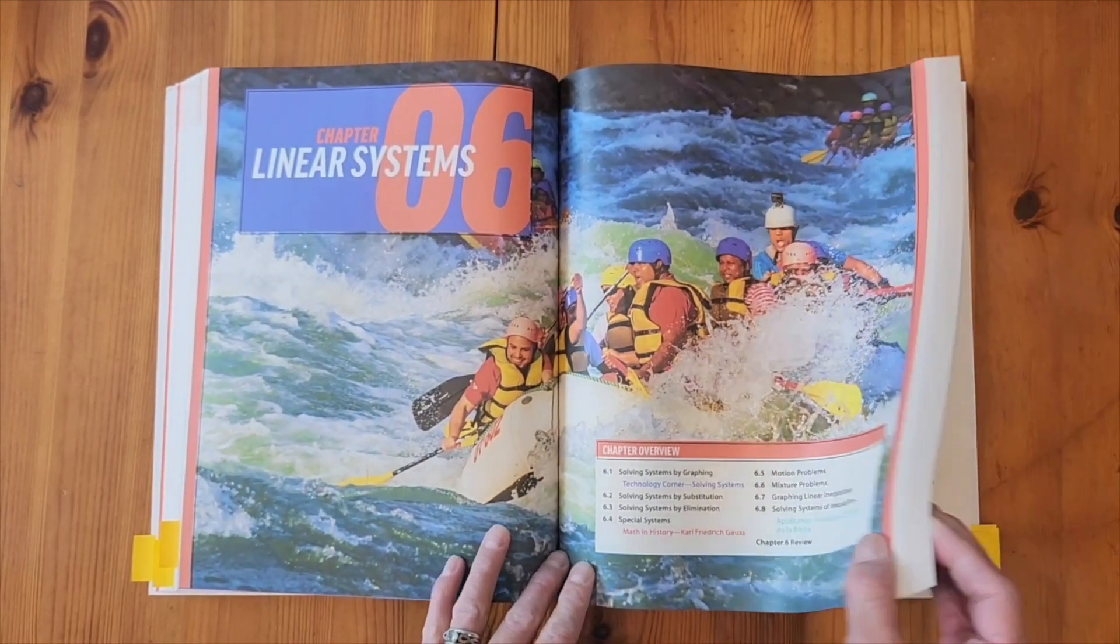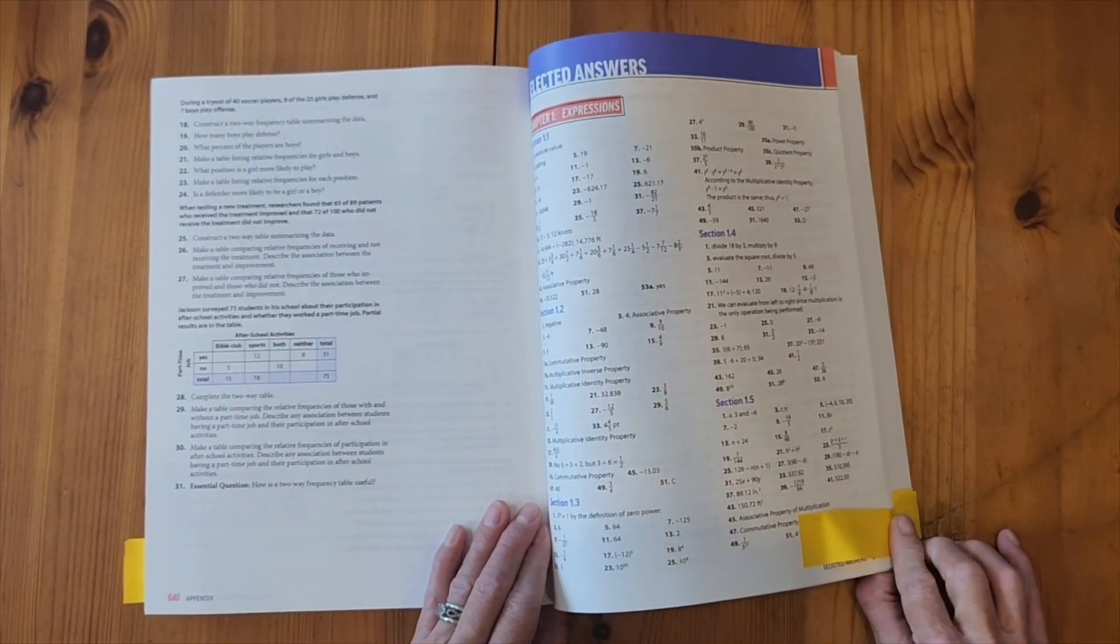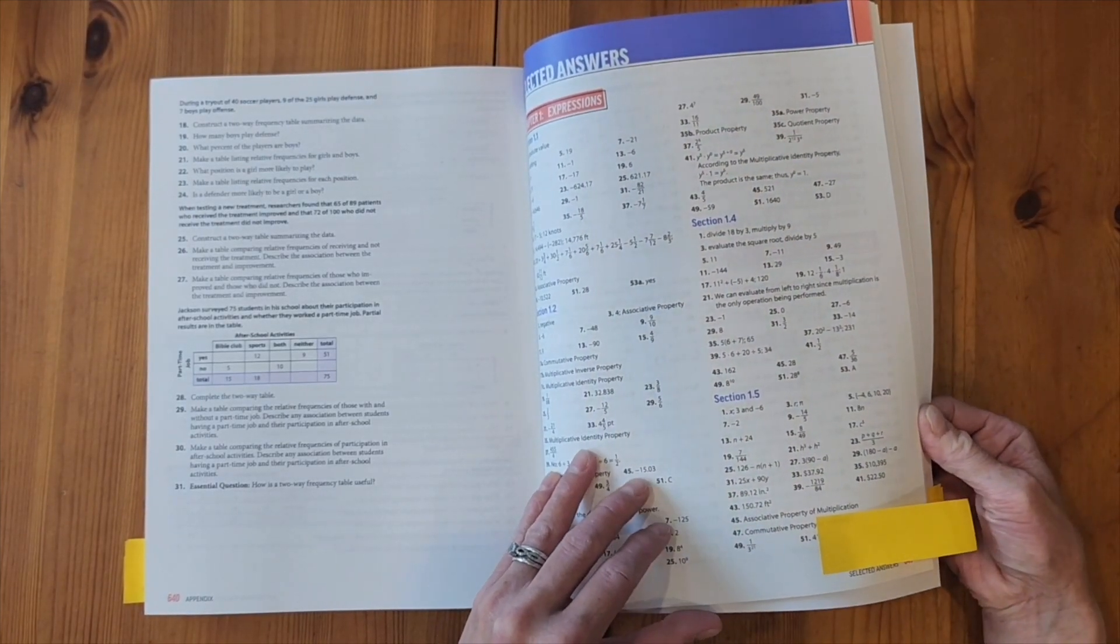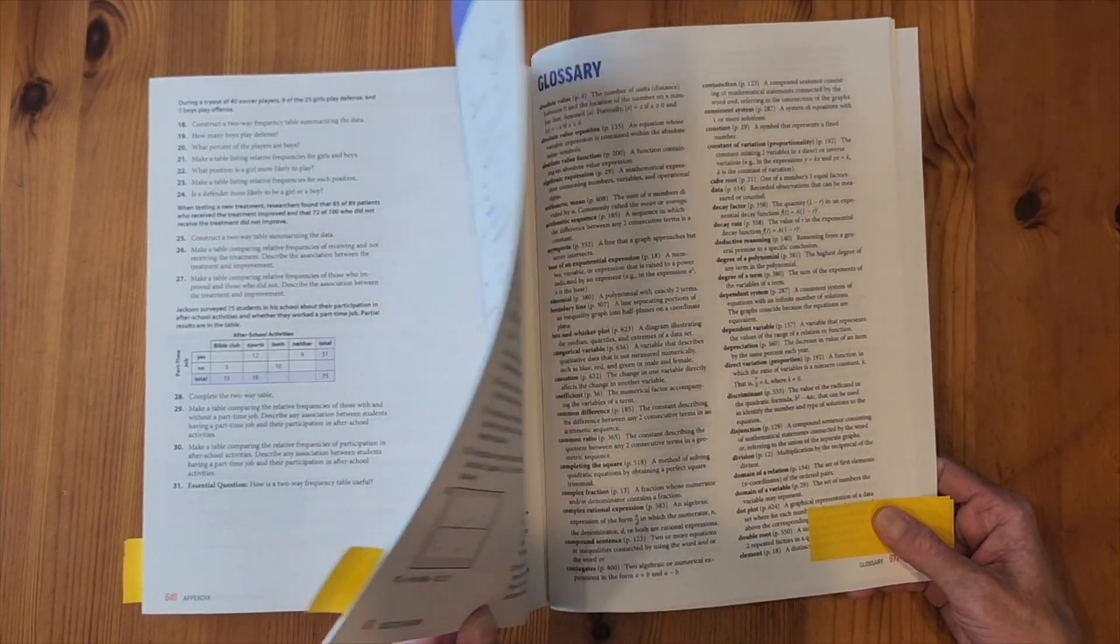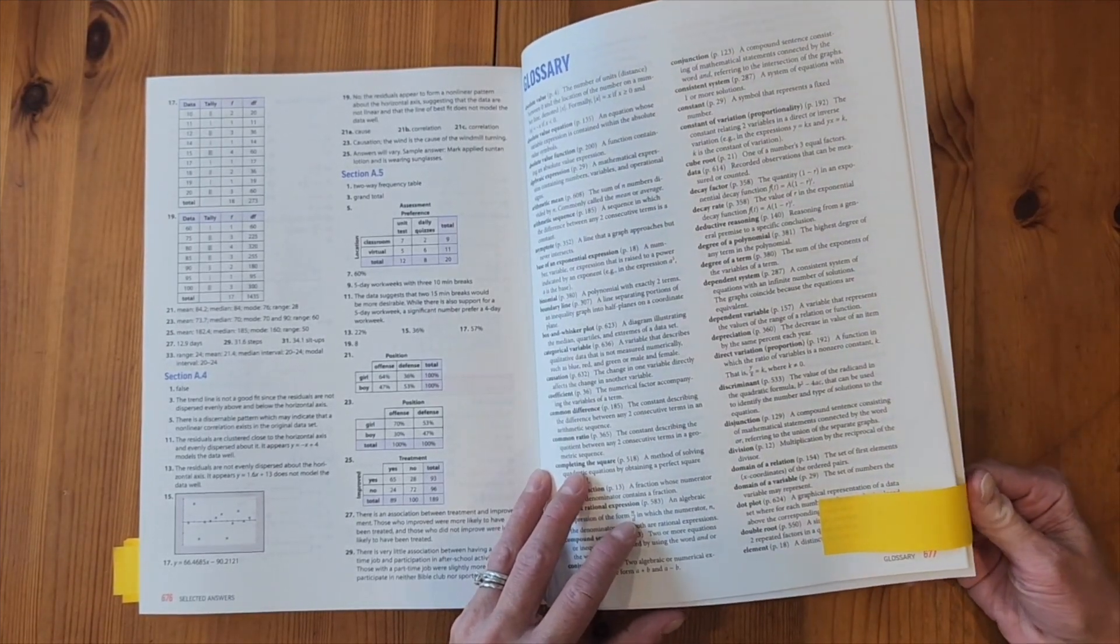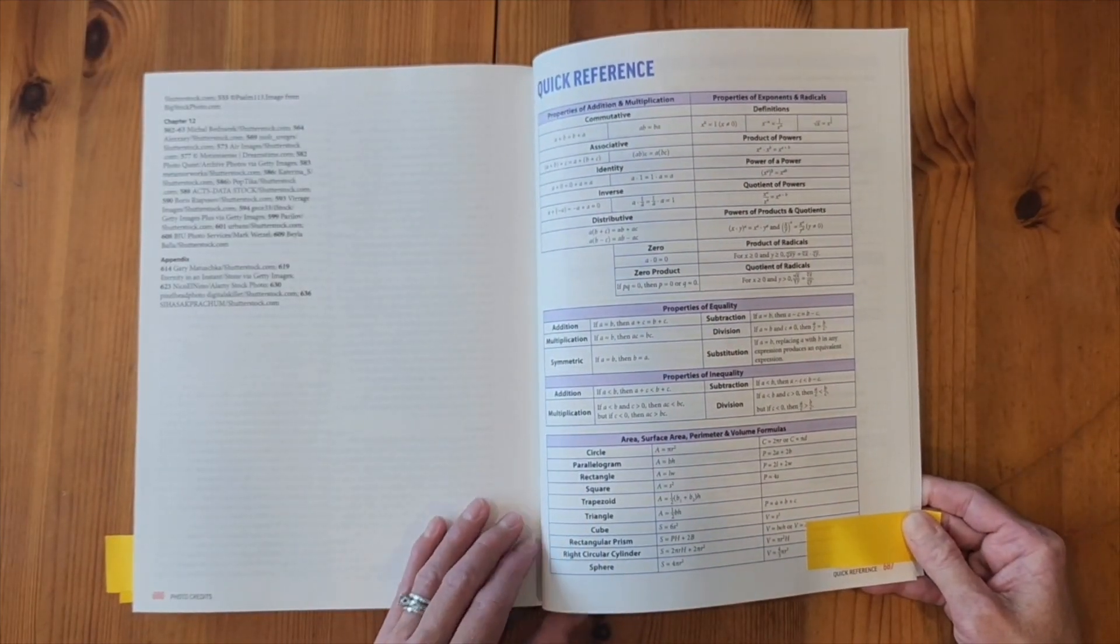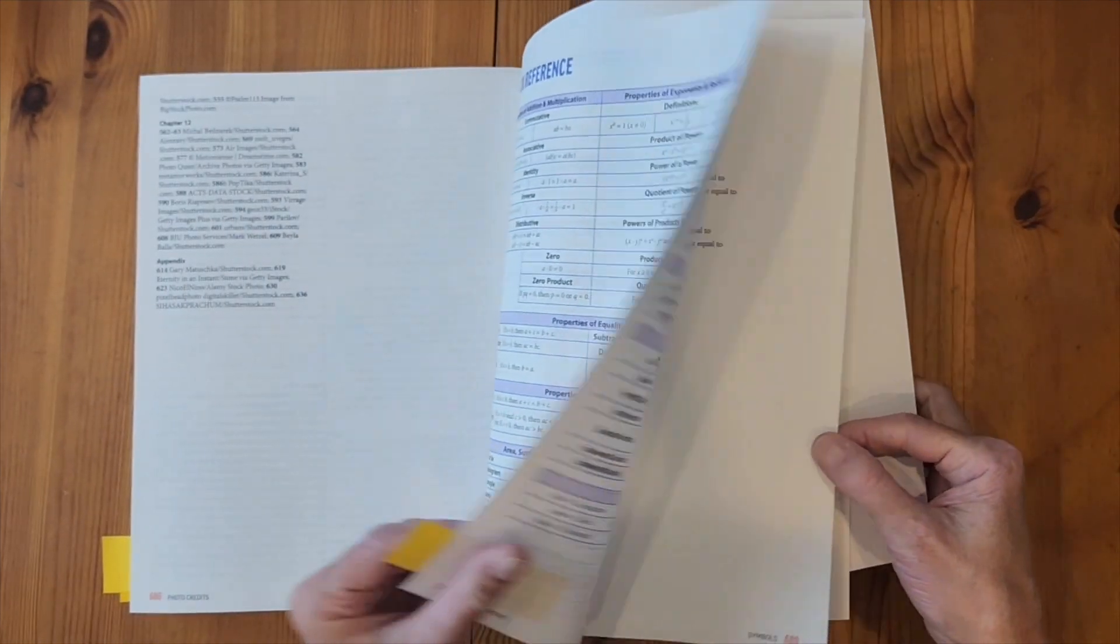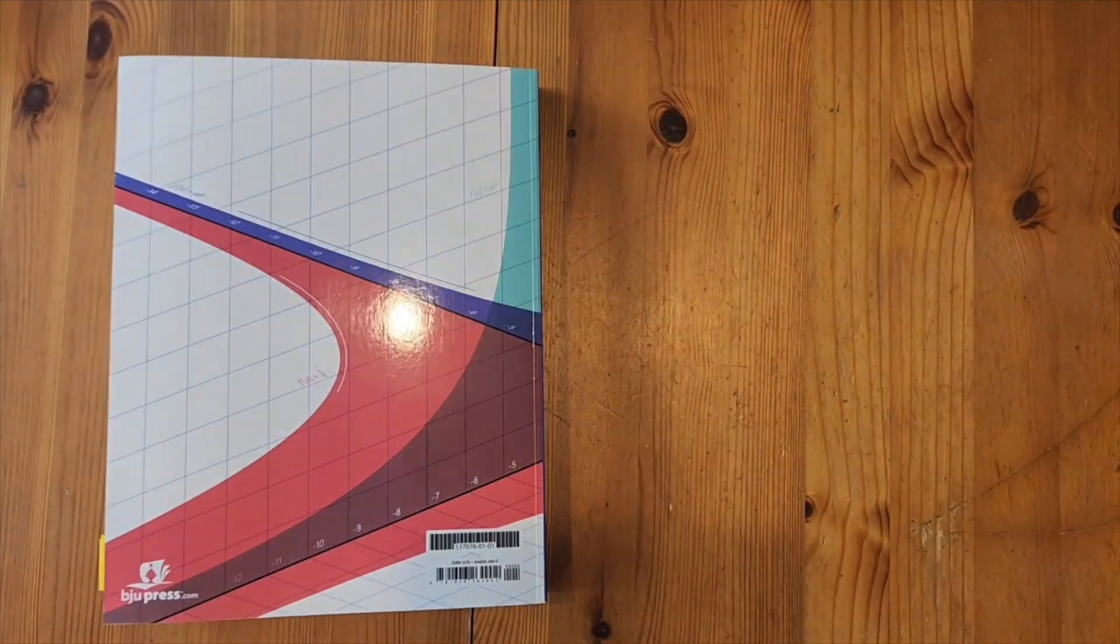So let me flip to the back. This book does have selected answers for the student. It is the odd numbers. So just be aware of that. If you're assigning odd numbers, they do have access to the answers. We also have a glossary for them to be able to look up words as needed. And then we've got those quick reference formula charts. And we also have that symbol page at the back of the book as well. So this is the student textbook.